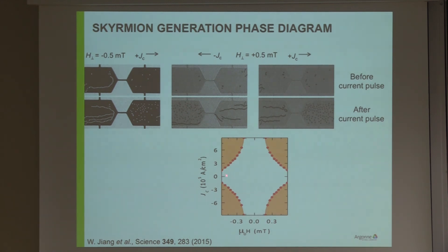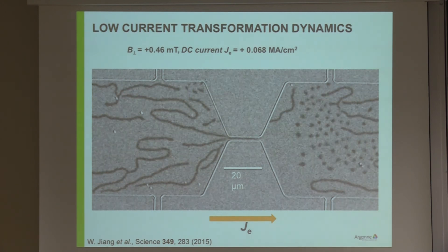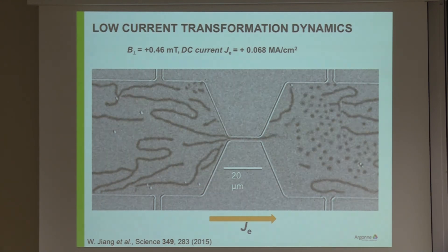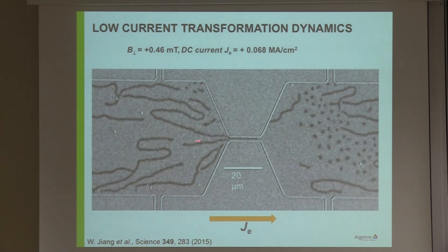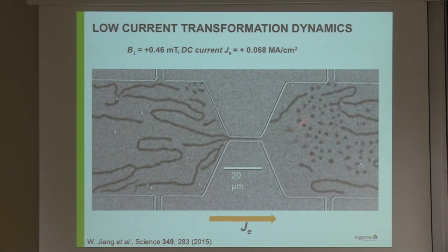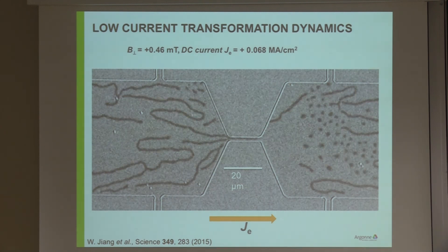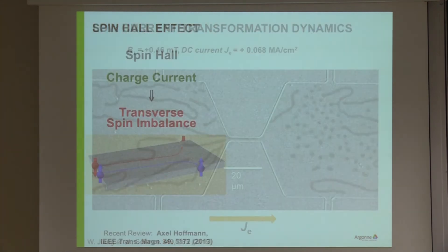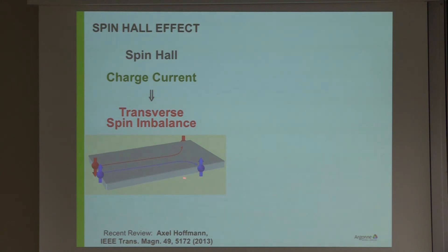We explored all combinations of current and magnetic field direction, and within these arched regions of the phase diagram is where we could create skyrmions. There is a critical current needed — if the current was too low, whatever was there was moving but no new skyrmions were created through the constriction. To understand the process better, we applied a current density about a factor of ten smaller than in the first images. What we could see more clearly is that one of these striped domains ends up in the constriction, and then every once in a while skyrmions are blown out on the other end.